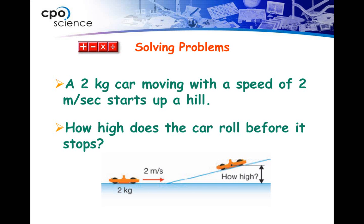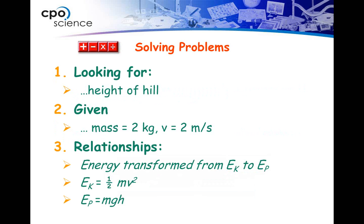Solving problems: A two-kilogram car moving at the speed of two meters per second uphill — how high does the car roll before it stops? We're looking for the height of the hill. The given values are mass of two kilograms and velocity of two meters per second. The formulas we'll use are one-half mass times velocity squared for kinetic energy, and mass times acceleration due to gravity times height for potential energy.